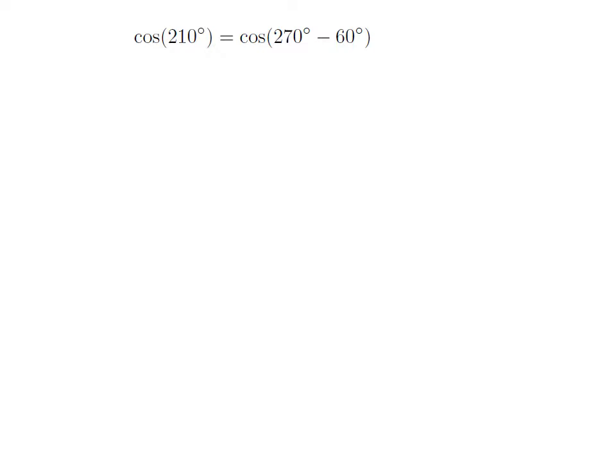As 210 degrees is equal to 270 degrees minus 60 degrees, so cosine of 210 degrees is equal to cosine of 270 degrees minus 60 degrees.